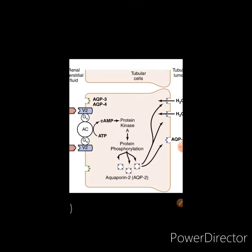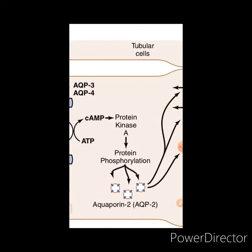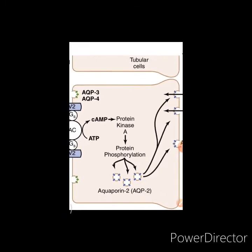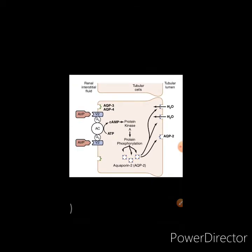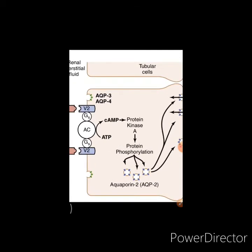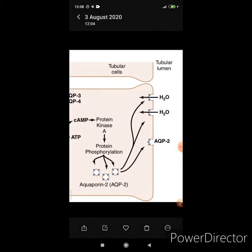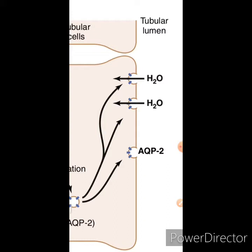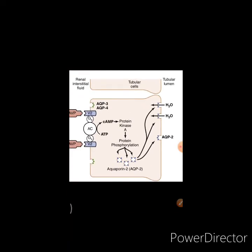cAMP activates protein kinase A. Activated protein kinase A causes phosphorylation of proteins. Protein phosphorylation causes translocation of aquaporin-2 from the cytoplasm to the luminal membrane. These aquaporin-2 proteins cluster in the luminal membrane and form water channels, through which water can easily pass from the lumen into the cell.